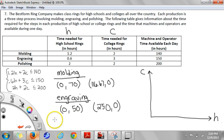And then last I'll do the intercepts for the polishing. If c was 0, then h would have to be 100. And in this case the coefficients are the same, so the other intercept matches.